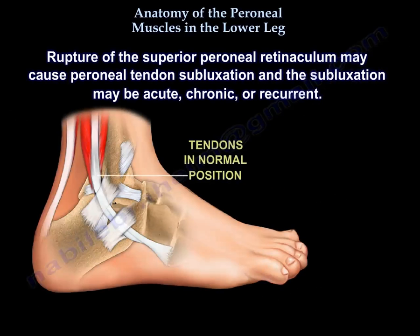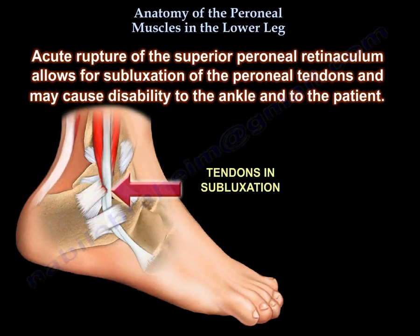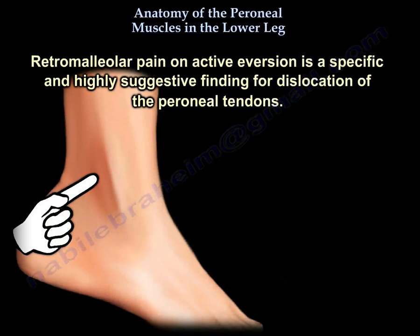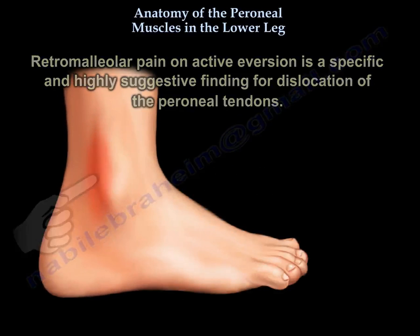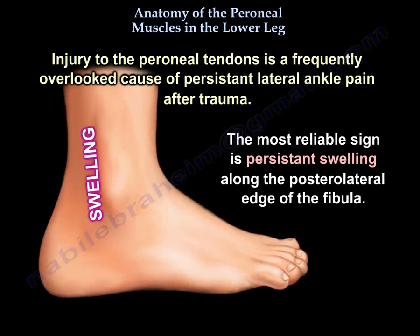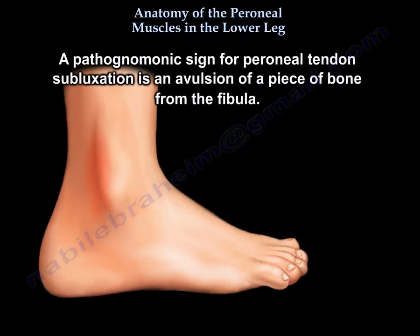Rupture of the superior perineal retinaculum may cause perineal tendon subluxation, and subluxation may be acute, chronic, or recurrent. Acute rupture of the superior perineal retinaculum allows for subluxation of the perineal tendons and may cause disability to the ankle and to the patient. Retromalleolar pain on active eversion is a specific and highly suggestive finding for dislocation of the perineal tendons. Injury to the perineal tendons is a frequently overlooked cause of persistent lateral ankle pain after trauma. The most reliable sign is persistent swelling along the posterolateral edge of the fibula.